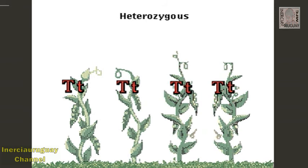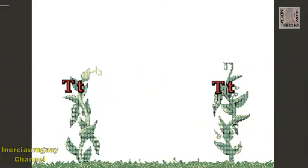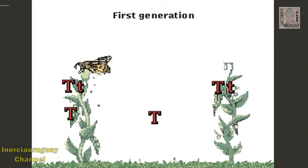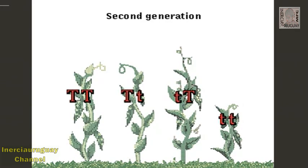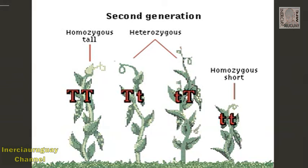Since these plants all appear tall, we say that tall is the dominant trait and short is recessive. When these heterozygous offspring are crossed, three of the resulting plants carry the dominant trait and appear tall. The recessive trait shows itself in the plant that is homozygous with two alleles for short. This type of simple inheritance is one of the many ways that traits are passed from parents to their offspring.